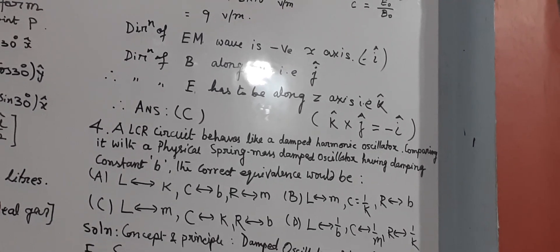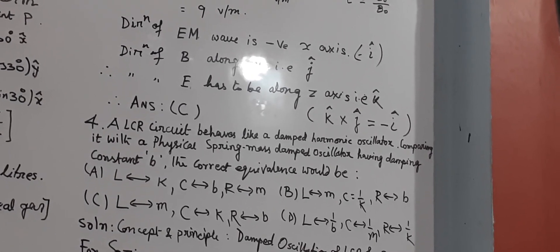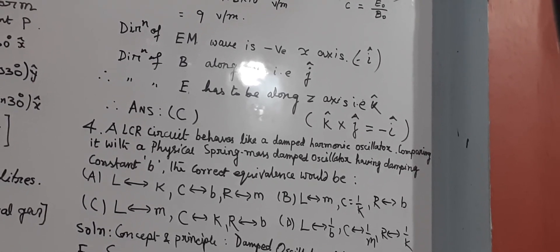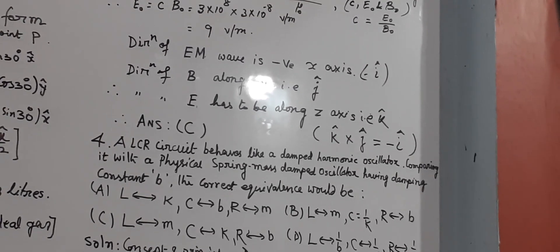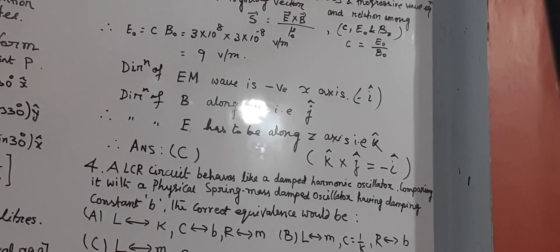Now, we have to find out E, that means, E has to be along K direction, so that it can give you K unit vector, that is, K cross J will give you minus I. So, answer C is matching with this. So, we can mark C.